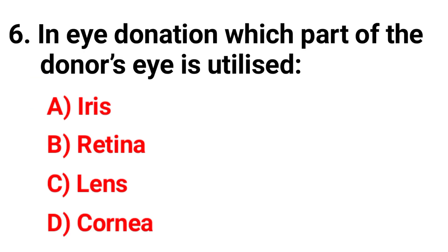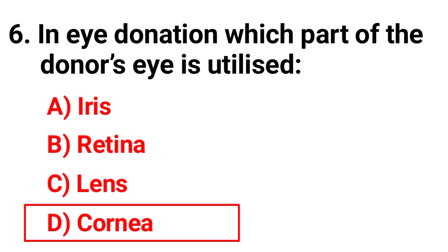Question 6: In eye donation, which part of the donor's eye is utilized? Option A: iris, B: retina, C: lens, D: cornea. The correct answer is option D — cornea.